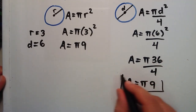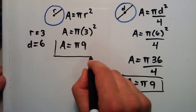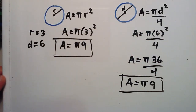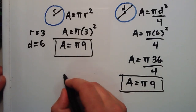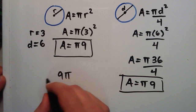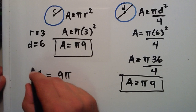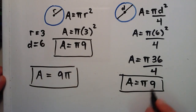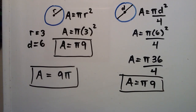Both ways, we found that the area inside a circle of radius 3 or diameter 6 is equal to pi times 9, or 9 times pi if you prefer. It's probably more conventional to write it as 9 times pi, but either way it means the exact same thing. That's how you can find the area of a circle if you're given a radius or a diameter.